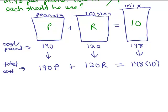So notice this is the total costs. Now I'm just going to look at the total pounds. I know that I've got P pounds of peanuts, R pounds of raisins, and that adds up to 10 pounds total. This gives me the equation P plus R equals 10.